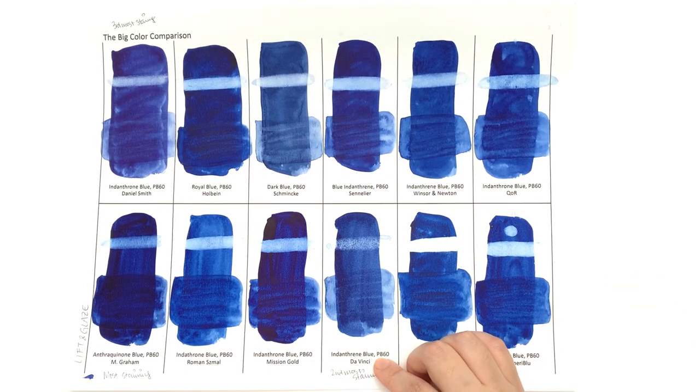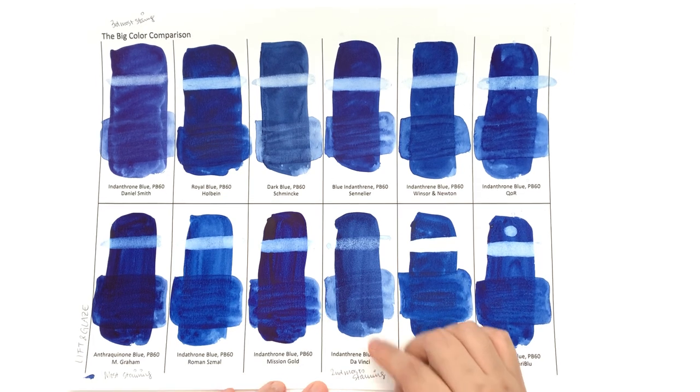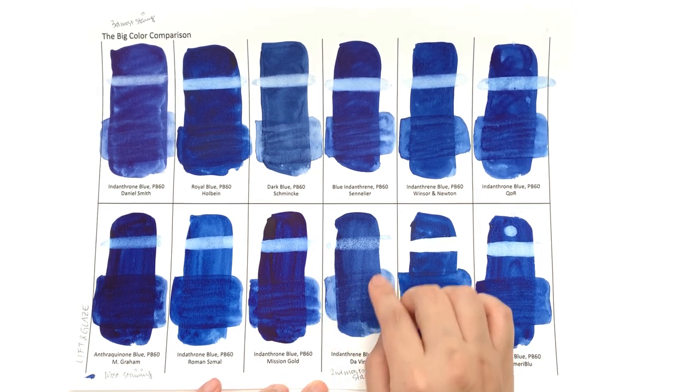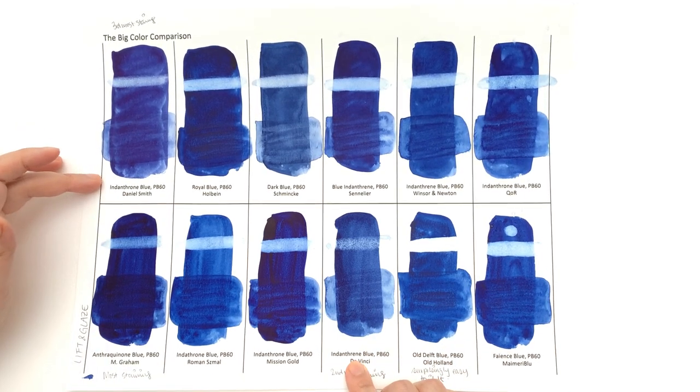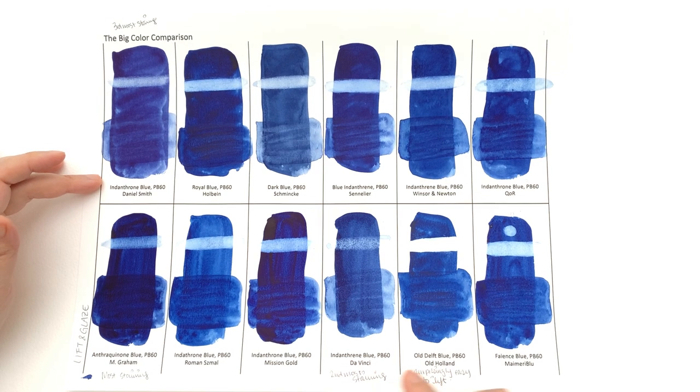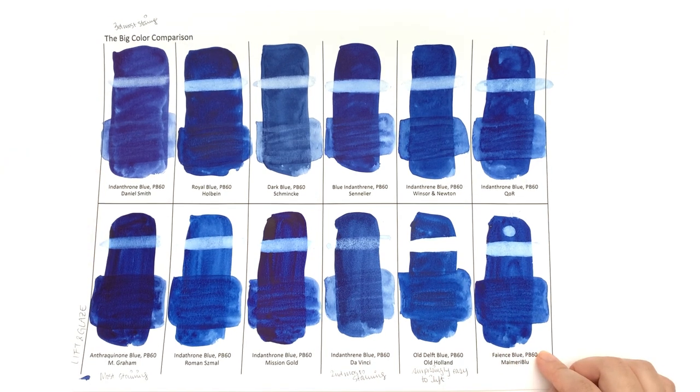However, because of that bubbling issue I still would not recommend it. Da Vinci's one is also a pretty good glazer because it is the most staining - you get very clear lines. So M. Graham, Roman Szmal, Da Vinci, and Daniel Smith recommended for doing lots of glazing.